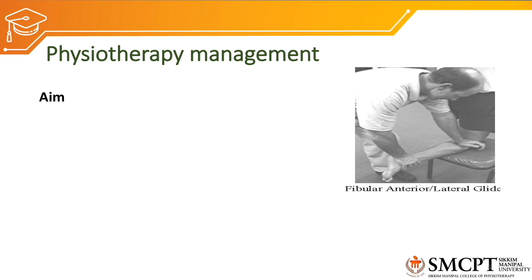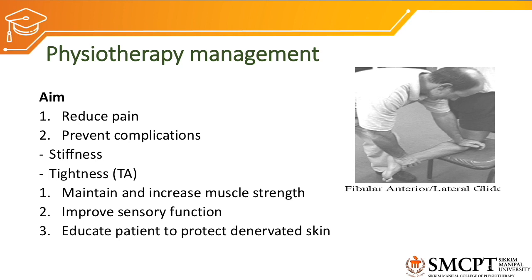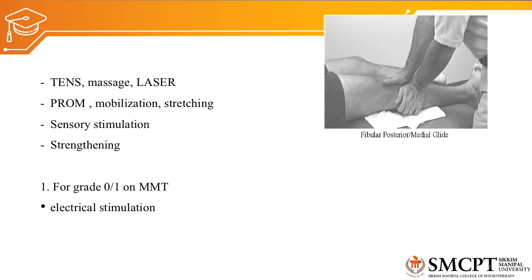The physiotherapy goals for common peroneal nerve injury are to reduce pain, prevent complications such as stiffness and tightness, maintain and increase strength of dorsiflexors and everters of the foot, improve sensory function, educate the patient to protect the denervated skin and the dragging foot, and ultimately improve activities of daily living. Pain is reduced using TENS, massage, and laser therapy. Passive range of motion exercises and mobilization reduce joint stiffness. Stretching of muscles and the Achilles tendon maintains muscle length. Sensory stimulation techniques such as stroking, brushing, and icing help improve sensory function.